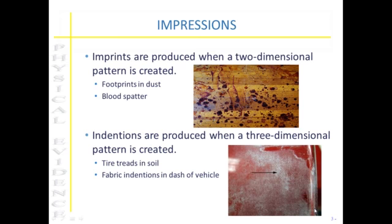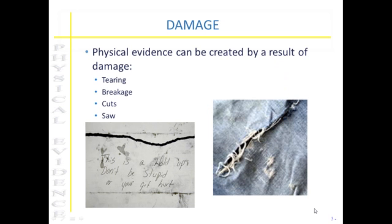Good examples of two-dimensional patterns are any type of patterns left in very light coatings of dust or dirt, or produced by blood or oily surfaces. Indentions are deeper, three-dimensional patterns — things such as tire treads left in soil or fabric impressions pushed into a vehicle during hard contact in an accident. Physical evidence can also be produced just through damage.